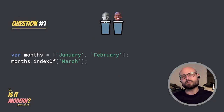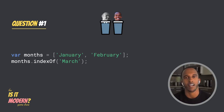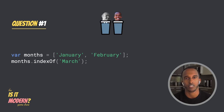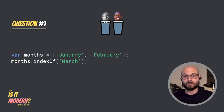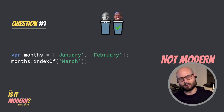For question one, we have these two lines of code. Modern or not modern? I see months is declared using var, and I'm pretty sure indexOf was introduced in ES5. So this is not modern? Correct. There's no inherently new syntax being used here, so it's not modern.